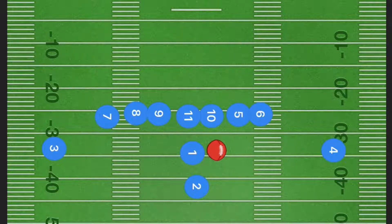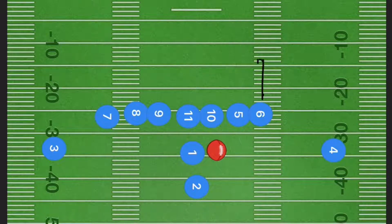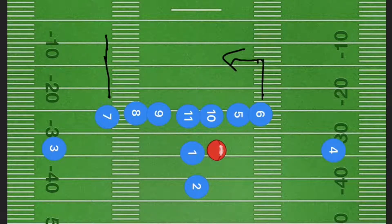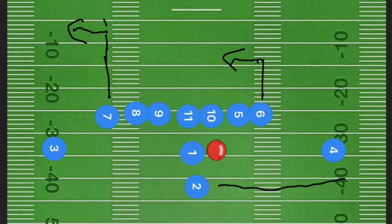In this first football play, our number one options are going to be our tight ends. Player six is going to go up about 10 yards and cut towards the middle of the field, while player seven is going to go up about 15 to 20 yards and then go out at a 90-degree angle towards the sideline — an out route. Player two is also going to be going towards and running up the sideline.